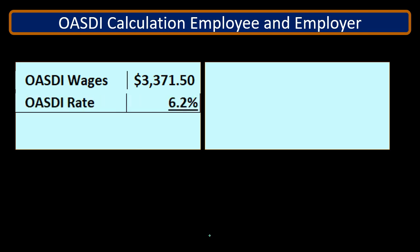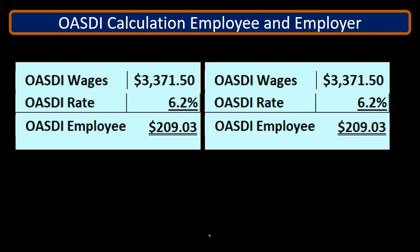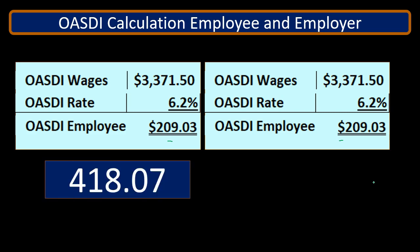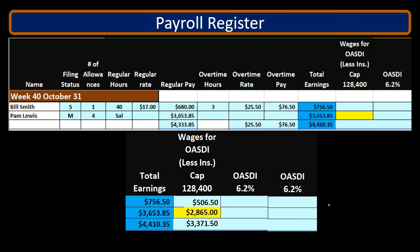We multiply $3,371.50 times 6.2% (or 0.062) to get $209.03 for the employee portion. The same calculation applies for the employer portion: $3,371.50 times 6.2% equals $209.03. Note that we do this twice — once for the employee coming out of their paycheck, and once for the employer coming out of the employer's checkbook — for a combined total of $418.07.